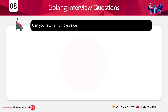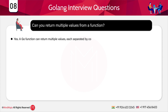Can you return multiple values from a function? Yes, we can. A Go function can return multiple values, each separated by commas in the return statement. When declaring the function, you also need to have multiple parameters separated by commas, and accordingly you can return multiple values using commas.